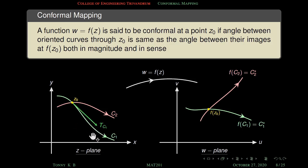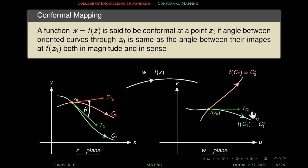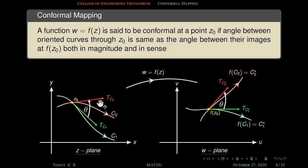The tangent tc₁ is the tangent of c₁ at z₀, and tc₂ is the tangent of c₂. θ is the angle between c₁ and c₂, measured from c₁ to c₂ in the anticlockwise direction — that is the sense. We also consider tc₁* and tc₂*, the oriented tangents of c₁* and c₂*, and measure the angle from c₁* to c₂*. So the angle between c₁ and c₂ is the same as the angle between f(c₁) and f(c₂) both in magnitude and in sense — this is the meaning of conformality.